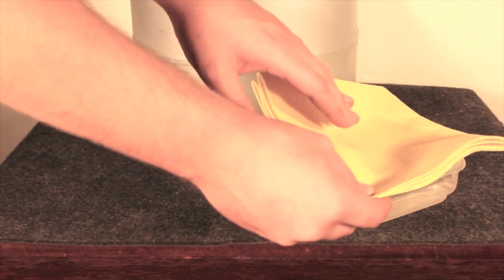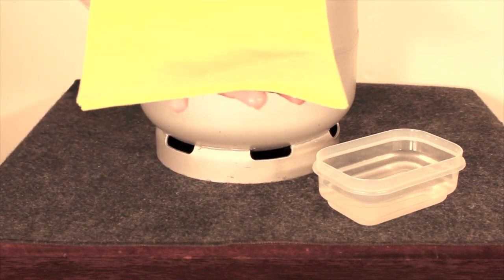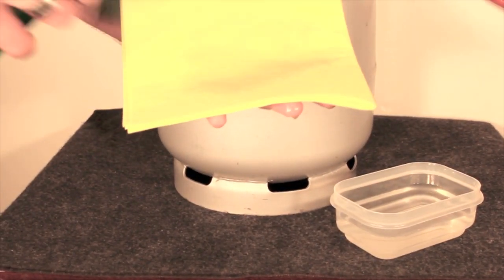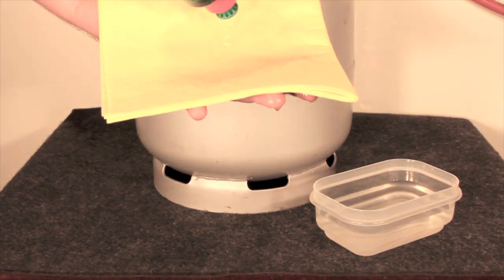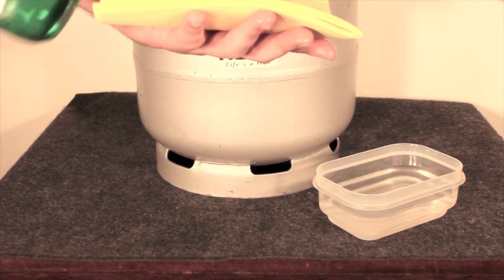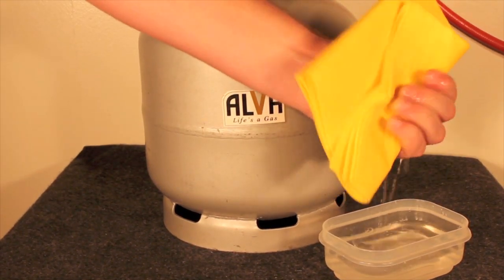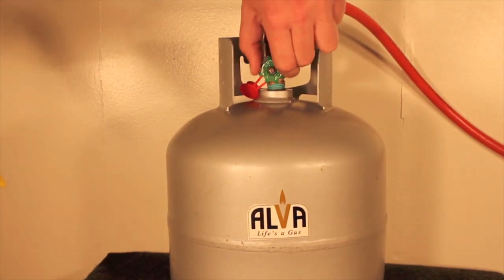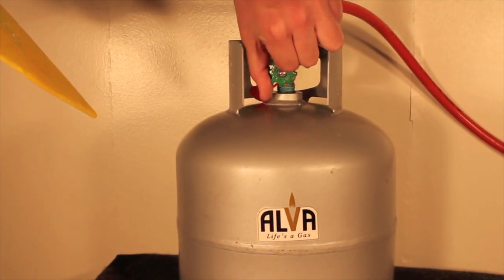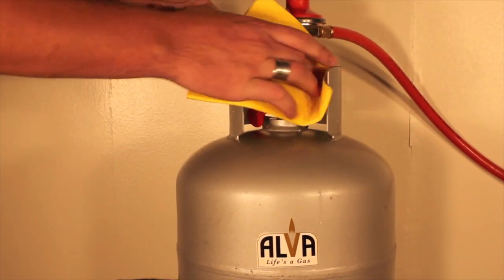Use one part soap, one part water solution to wipe down all connections. Open the cylinder valve 1.5 turn and proceed to do the leak test.